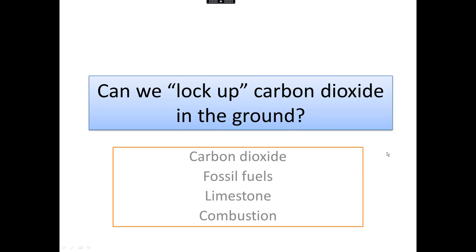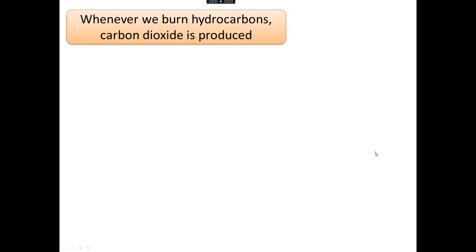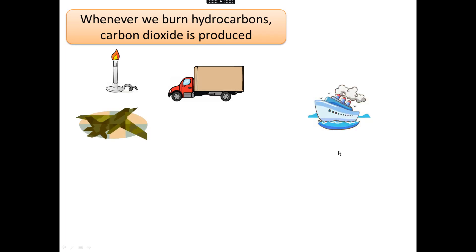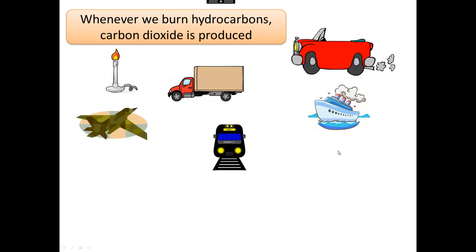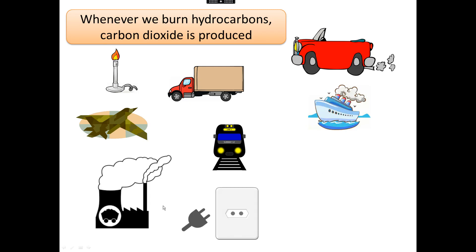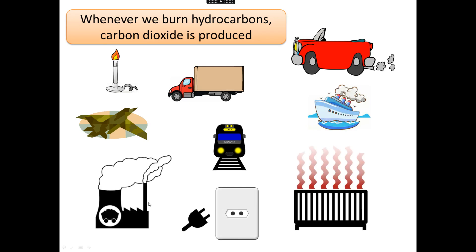Today's driving question: Can we lock up carbon dioxide in the ground? It matters because when we burn hydrocarbons, which is one of our most common fuels, carbon dioxide is produced. We put a lot of carbon dioxide in the atmosphere — not just from fuels, but from fossil fuel power stations which provide us with our electricity, and also from natural gas where a lot of central heating comes from. So we generate a lot of carbon dioxide and all of that goes into the atmosphere.